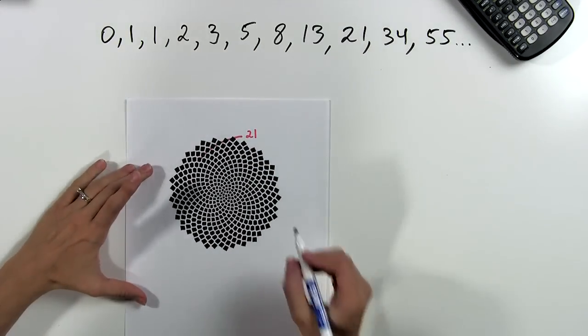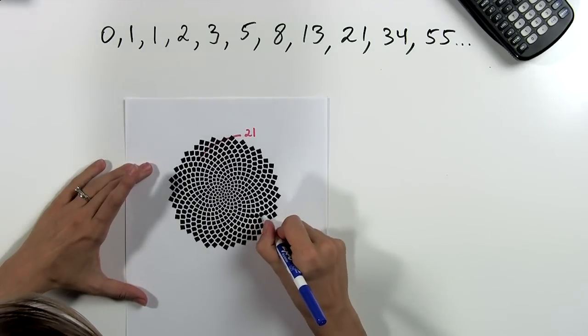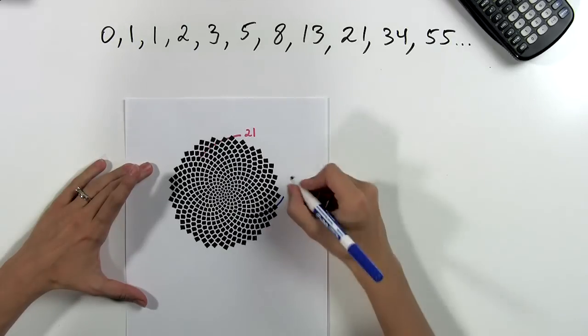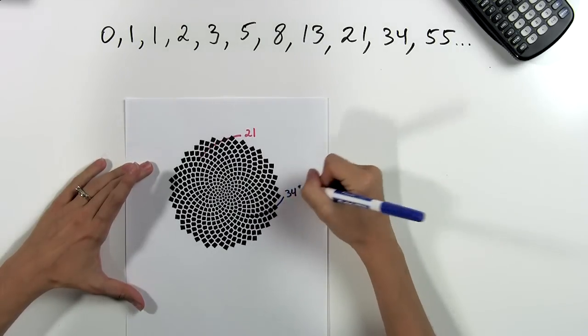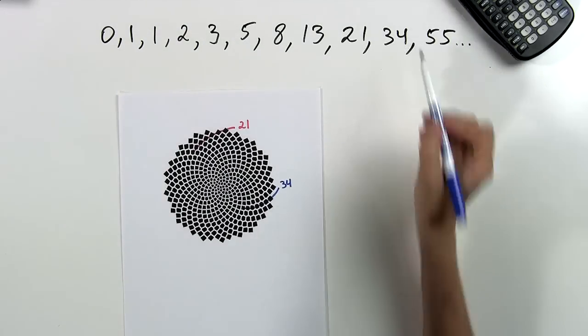Or we could count the spirals going in this direction, in which case we would get 34 total spirals, and that, of course, is also one of our numbers.